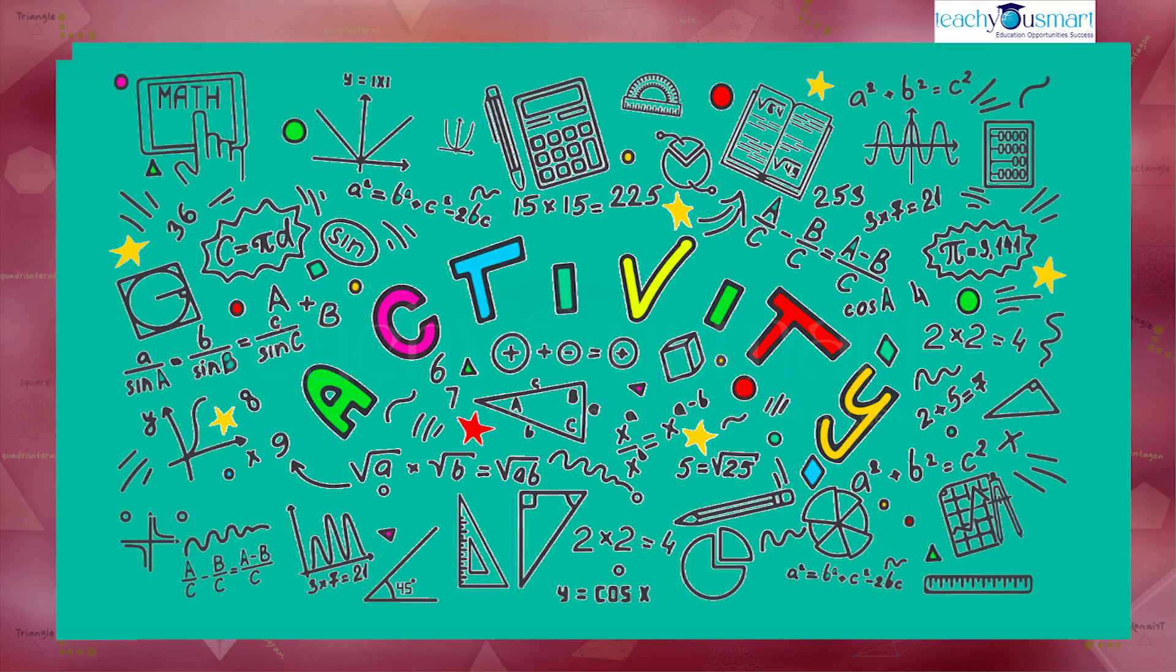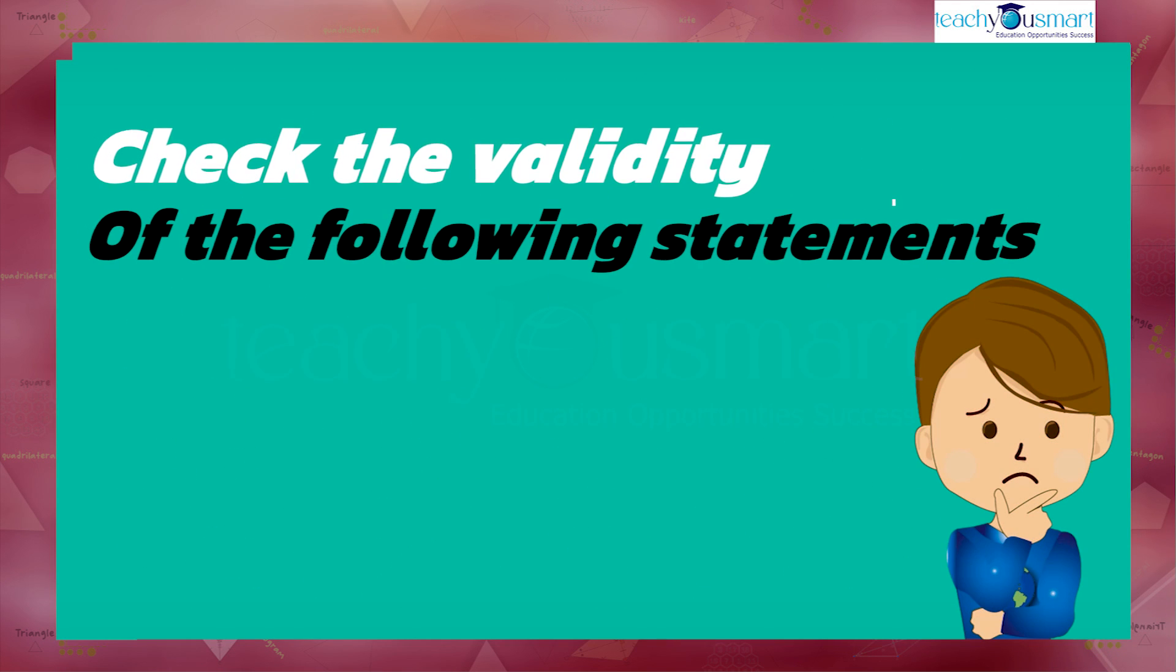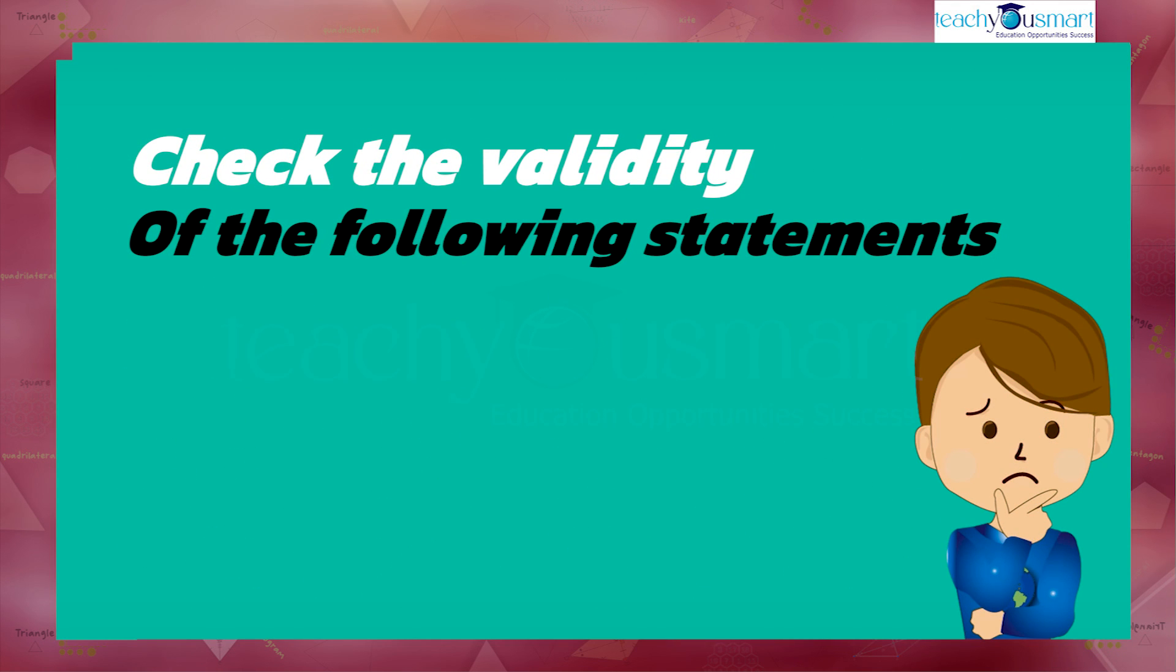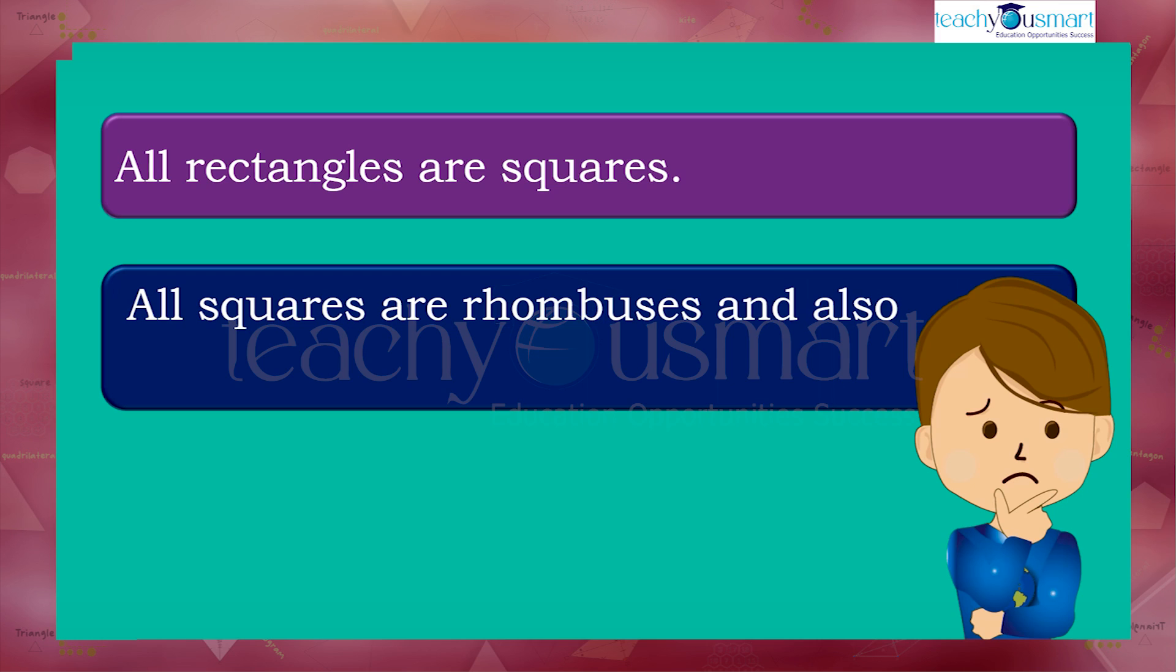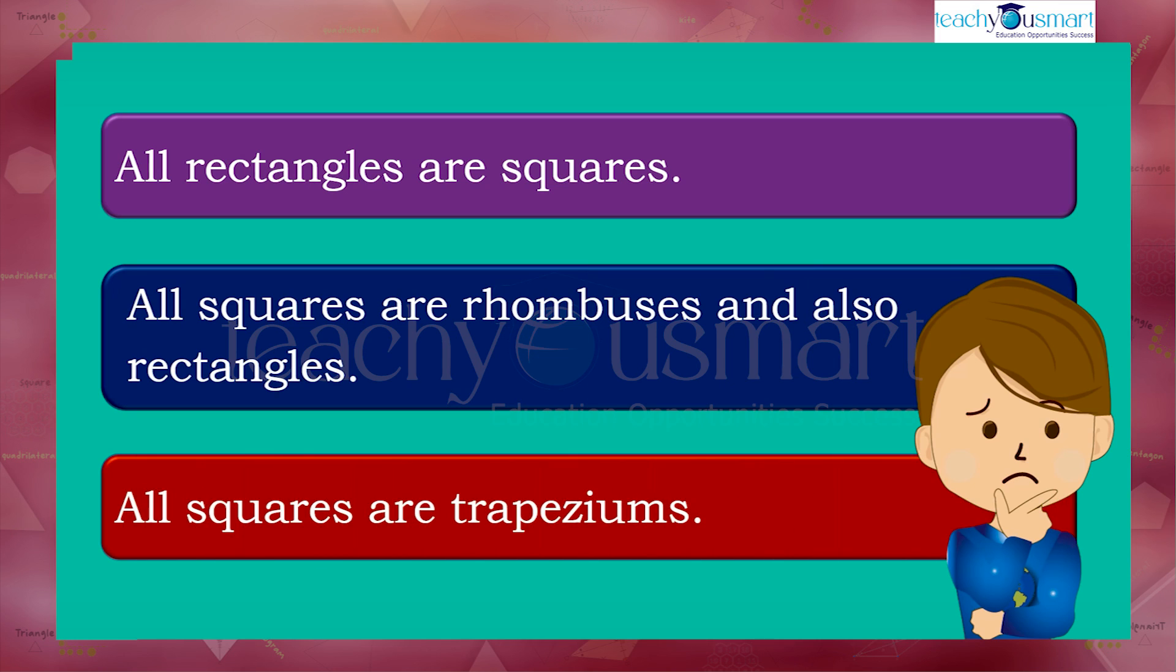Before winding up, let's check how much you understood by doing an activity. Check the validity of the following statements: (1) All rectangles are squares. (2) All squares are rhombuses and also rectangles. (3) All squares are trapeziums.